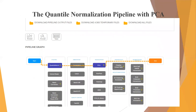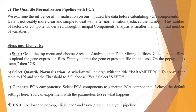The second pipeline is the Quantile Normalization Pipeline with PCA. We examine the influence of normalization on input file data before calculating PCA components. The data becomes clearer and simpler to work with after normalization. The number of factors or components derived through PCA is smaller than the initial number of variables — in this case, the genes — which is why we perform this step.